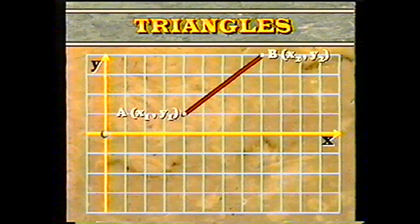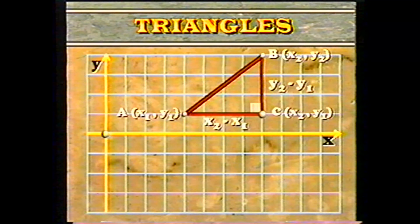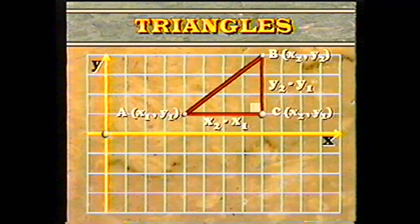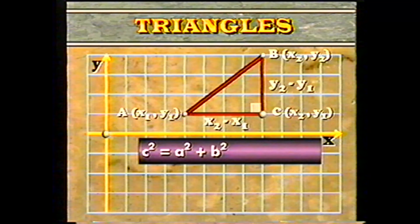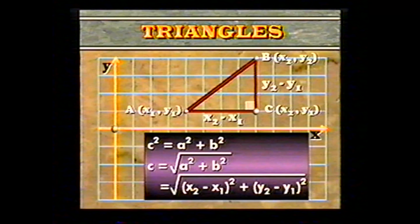In general, this method allows us to find the distance between any two points A and B in the coordinate plane. Let the first point A have coordinates (x1, y1), and let the second point B have coordinates (x2, y2). To make a right triangle, draw a new point C with coordinates (x2, y1). The horizontal distance between A and C is x2 minus x1, and the vertical distance between C and B is y2 minus y1. Since C squared equals A squared plus B squared, the distance equals the square root of (x2 minus x1) squared plus (y2 minus y1) squared. This is a general formula that can be used to find the distance between any two points.